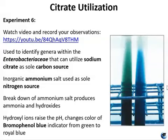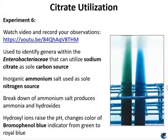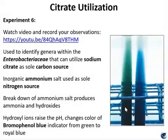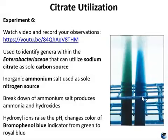The citrate test was designed to identify specific genera within the Enterobacteriaceae family that can utilize sodium citrate as their sole carbon source, using the enzyme citrate permease to transport citrate into the cell and metabolize it by way of the fermentative pathway. Inorganic ammonium salt is used as the sole nitrogen source. Breakdown of ammonium salt produces ammonia and hydroxides, which increases the pH. This changes the color from the bromophenol blue indicator: it starts out green before inoculation. If it stays green after incubation, the result is negative — the bacteria cannot produce citrate permease. If it turns blue, the pH has gone up, meaning the citrate is being utilized, ammonium salt has been broken down, and ammonia and hydroxides are now present in the media — that's a positive result.